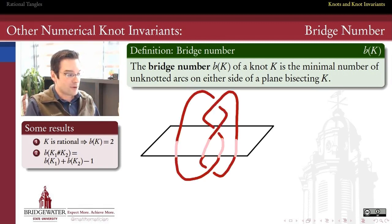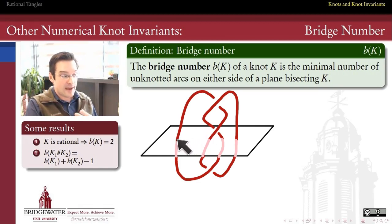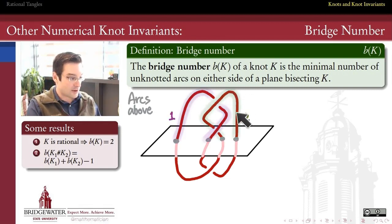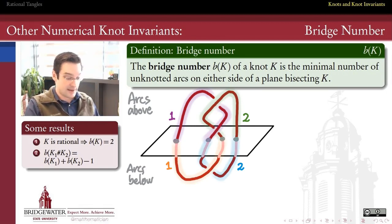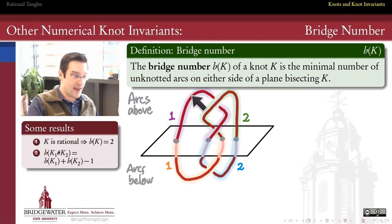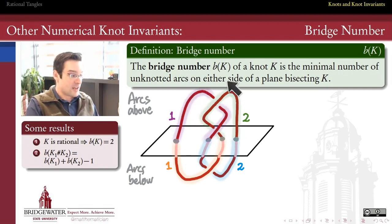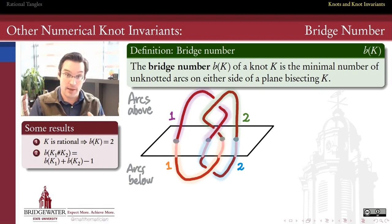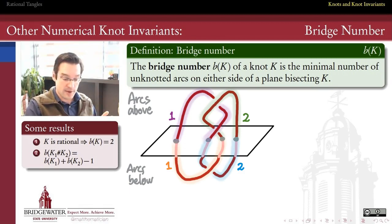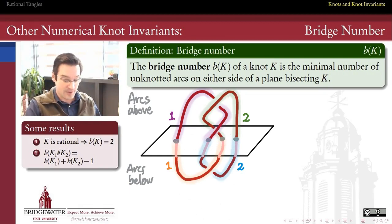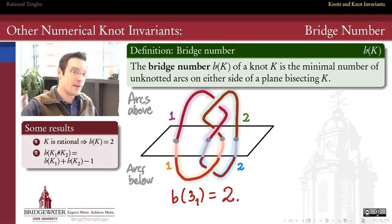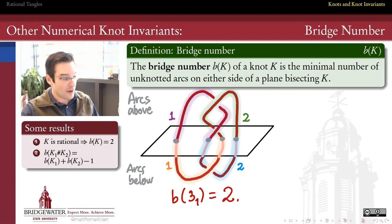Here's a diagram of the trefoil knot, 3-1. If I slice it with a plane in the middle, I count the arcs above and below. Above the plane I have an arc highlighted in purple — that's arc number one — and an arc highlighted in green — arc number two. Below the plane I likewise have two arcs connecting here this way and this way. All these arcs are unknotted; even though they twist around one another, each one individually is an unknotted arc. So for this knot, the bridge number is two. And in fact, the only knot with a bridge number of one is the unknot.